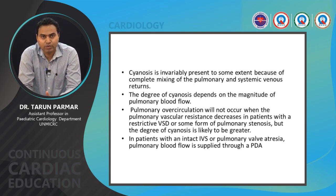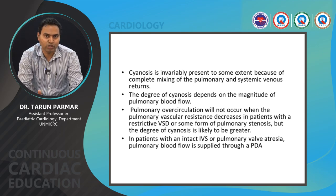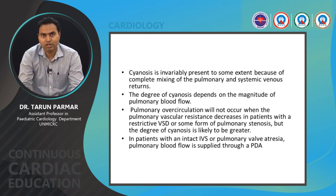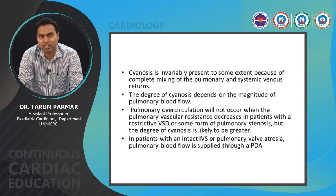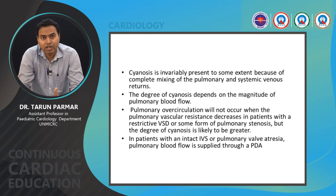The degree of cyanosis depends on the magnitude of pulmonary blood flow. In any admixture physiology situation, if pulmonary blood flow is low, there is severe cyanosis; if pulmonary blood flow is good, cyanosis is minimal. In cases of intact ventricular septum and pulmonary valve atresia, there is a very high degree of cyanosis.